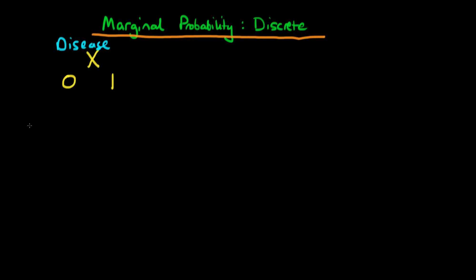There is also another random variable Y which takes on a value of zero if an individual has symptoms for that disease and a value of one if they don't. So Y represents whether or not an individual is actually symptomatic — whether or not that individual has symptoms.